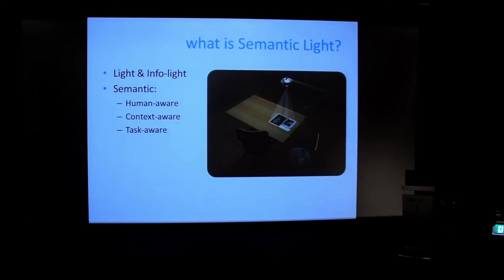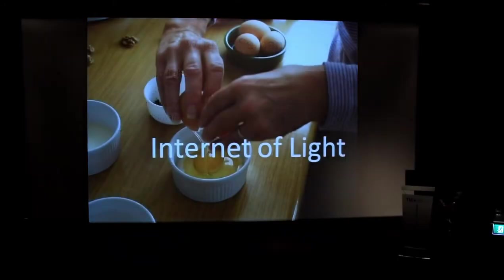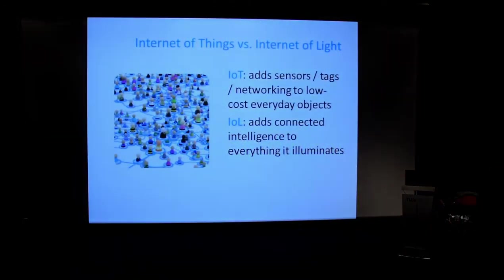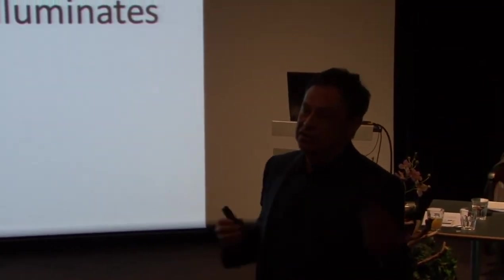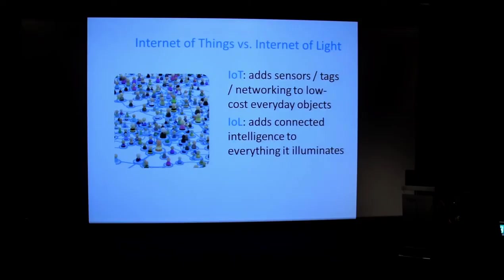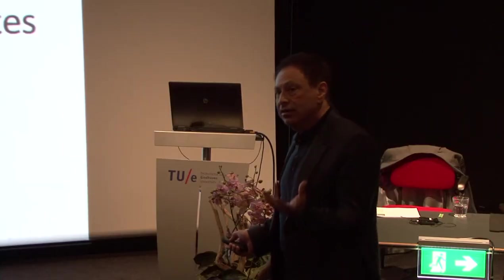This is basically what we consider to be semantic light. It's light which has a human perception model. It's aware of the environment which we are in, and it's also aware of the task we are doing. With this in mind, we could associate to a physical object some digital information, and we get to the notion of an internet of light — which is different from the internet of things, where we take objects and add intelligence by adding sensors and computation and connectivity. In this case, we have a very inexpensive type of internet of things where illumination adds connected intelligence to regular objects.